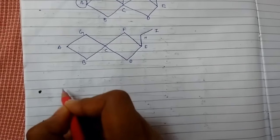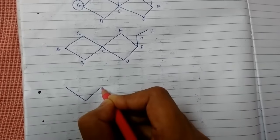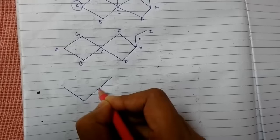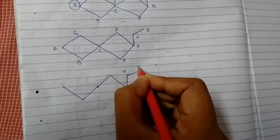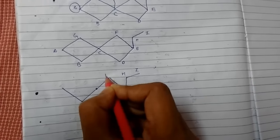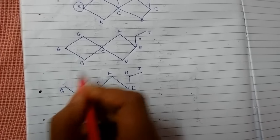Suppose I have chosen the vertex A. So A, B, C, F, E, H, I. Let me label it. To construct the spanning tree we should have all the vertices of the graph.